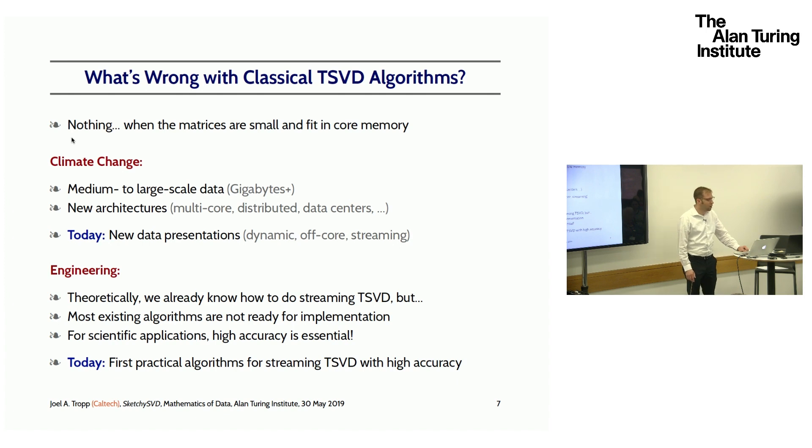I'm not going to be talking so much about those things today. Today I'm going to be talking about different ways of presenting the matrix. In particular, we're going to be interested in a streaming model where the matrix is given to us in dribs and drabs and it's only complete after some amount of time. This talk is really more about numerical analysis and engineering of algorithms. Theoretically, we already know how to compute the truncated SVD of a streaming matrix, but most of the existing algorithms aren't ready for implementation.